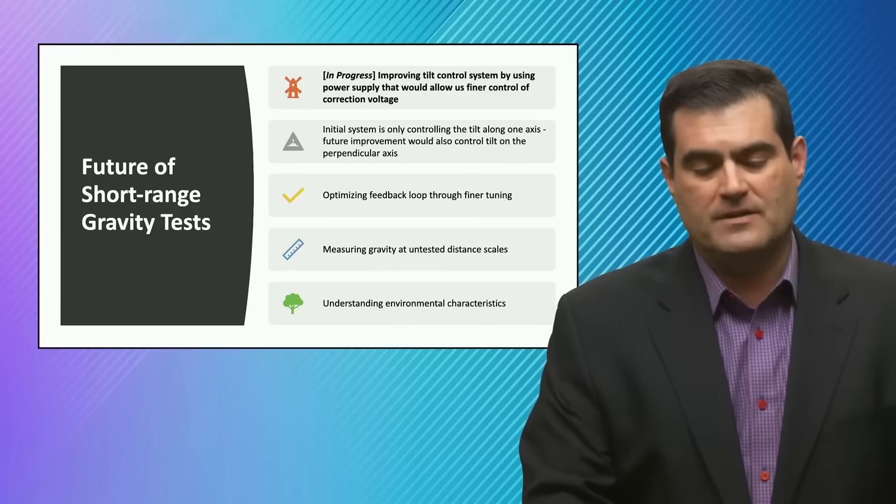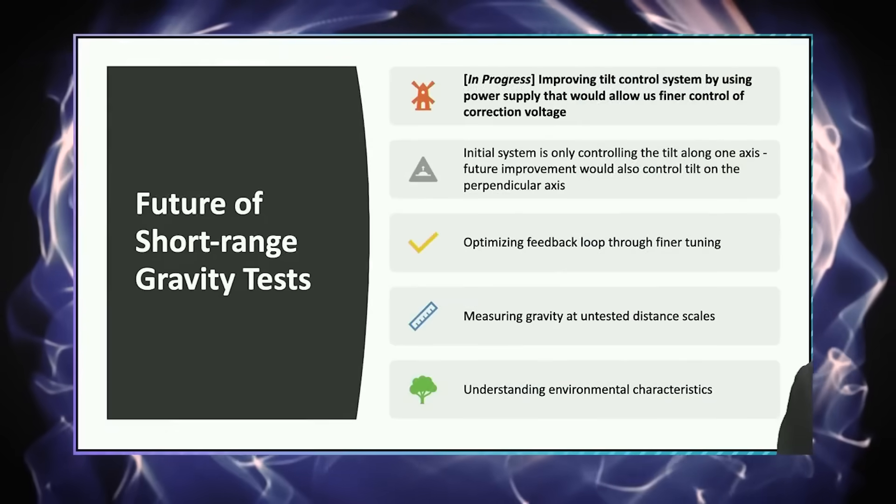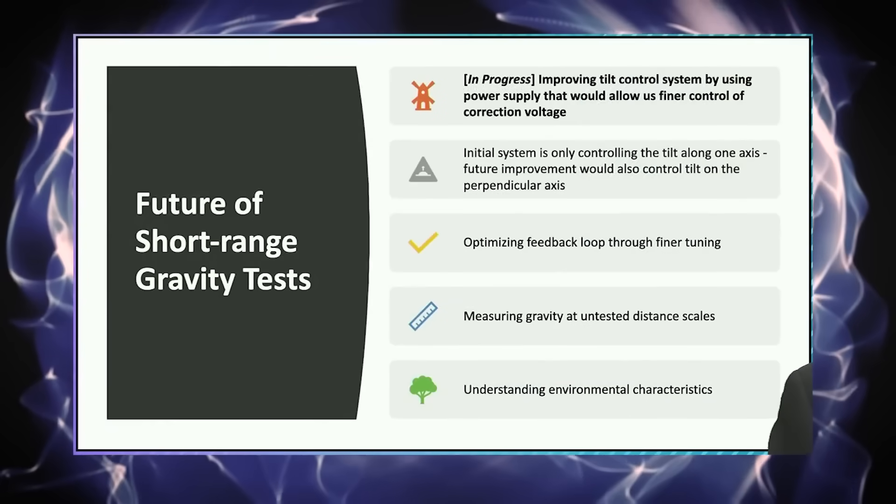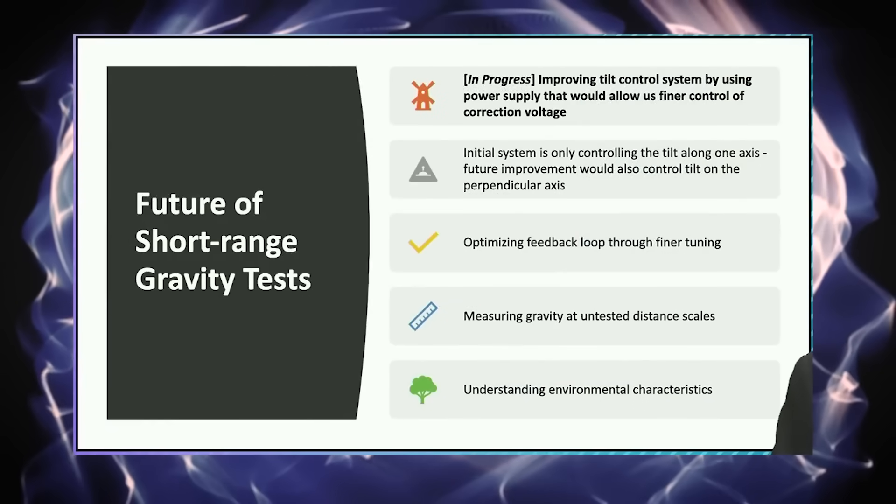So they're still working on this. They're still trying to improve the tilt over time. The smaller they can get it, the more accurate they can measure both alpha and lambda. So they want to have tighter and tighter feedback control.